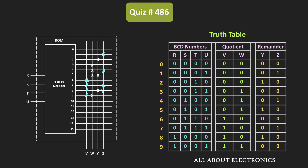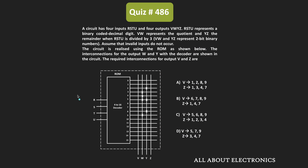So by making these interconnections, the VW output will provide the quotient for the given circuit, while the YZ output will provide the remainder. From this, we can say that for the given question, option B is the correct answer. That means the V output line should be interconnected with the 6, 7, 8 and 9 outputs, while the Z output should be connected with the 1, 4 and 7 outputs.